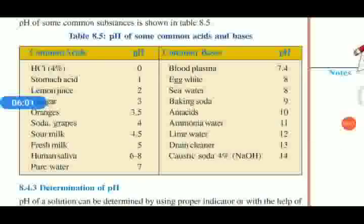Here is a pH of many substances we use and we deal with in our daily life. Some common acids: HCl, hydrochloric acid, its pH value is 0. Lemon juice, its pH value is 2. Pure water, its pH value is 7. Fresh milk, 5.